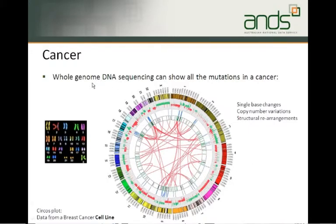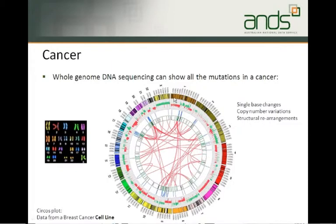Whole genome DNA sequencing has shown there are effectively a lot of mutations in these tumours. There can be single base changes — where an A is changed to a T or a G is changed to a C. But there are also variations in copy number of genes and structural rearrangements, some of which can be quite extreme. These are shown here by all of the red lines — this line here represents that half of chromosome one has been attached onto chromosome eight in this particular cell.